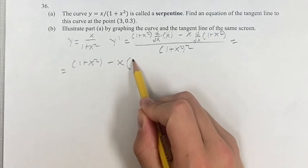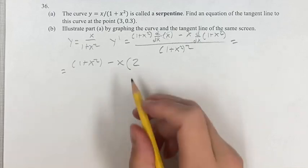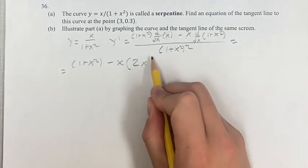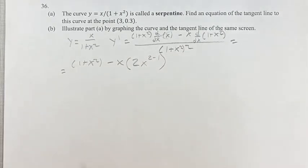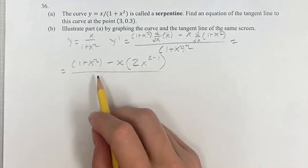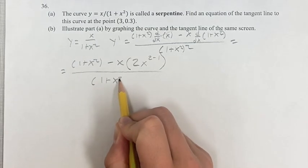Which is 2, bringing down that exponent into the coefficient, times x to the 2 minus 1, subtracting 1 for your new exponent. This is going to be over 1 plus x squared squared.